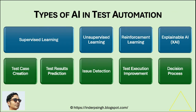There are four main types of AI in testing and AI in test automation. Supervised learning — this type of AI learns from labeled datasets. Its applications include automated test case creation, test results prediction, and defect prediction.